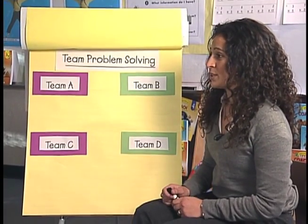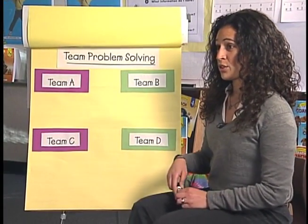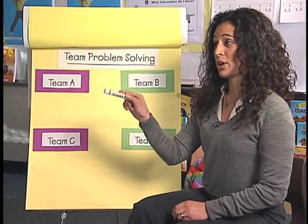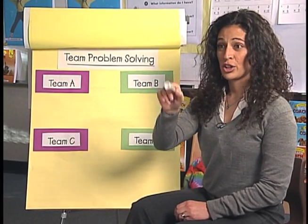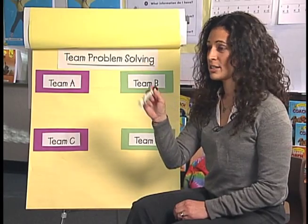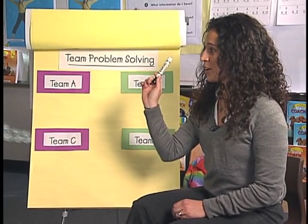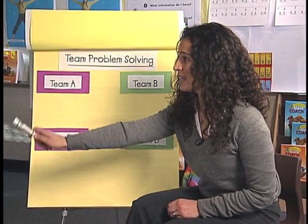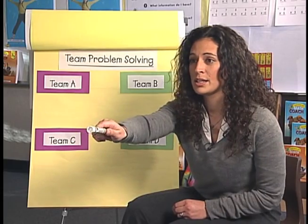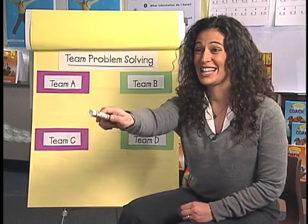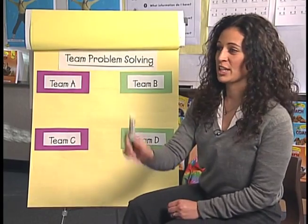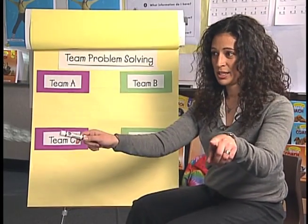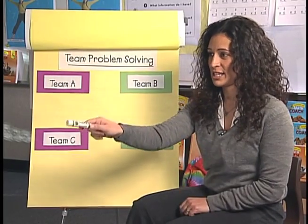First thing we need to do is decide who's in what group, and so what I'm gonna have you do is sound off A, B, C, D and then start over on A, okay? So sound off for me. So we have two A's, two B's, a C and a D.